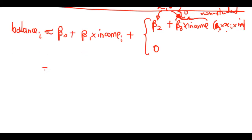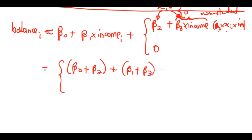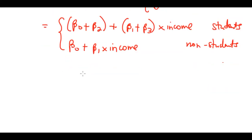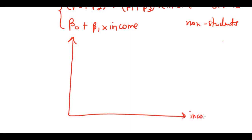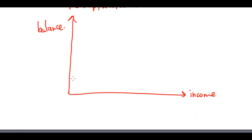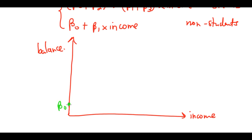So now we have two different regression lines for students and non-students, and they are no longer parallel — they have different slopes. The student line has slope β₁ + β₃ and intercept β₀ + β₂, while the non-student line has slope β₁ and intercept β₀. This allows changes in income to affect students and non-students differently.